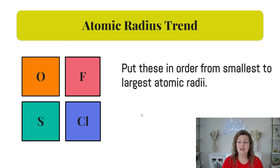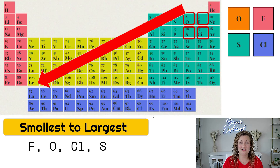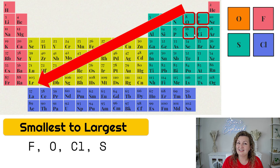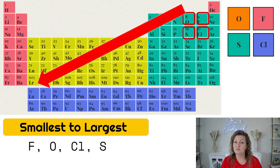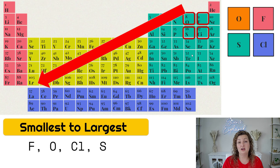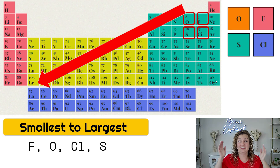Let's try another one. Go ahead and put these in order from smallest to largest on the periodic table. The smallest is again going to be fluorine because we're still in that upper right-hand corner. These are all non-metals and they're all super close together. The largest is going to be sulfur. The part that's difficult is the two in the middle. Oxygen is going to be slightly smaller than chlorine because oxygen is in period two, which means it has two energy levels, while chlorine is in period three, which means it has three energy levels, so it's a slightly larger atom.